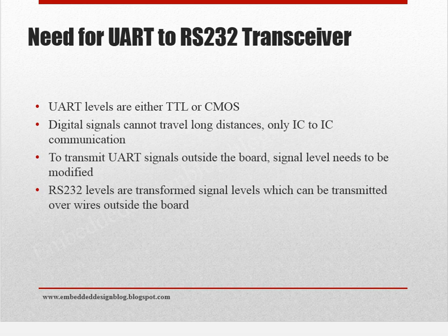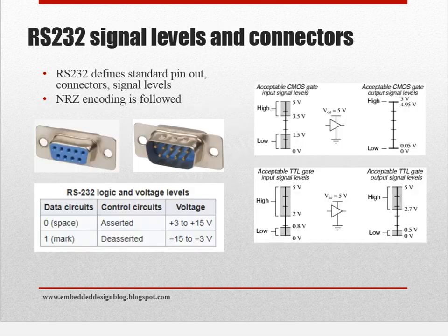We have been talking about TTL, CMOS, and RS232. For CMOS levels, 0 to 1.5 volts is treated as a logic low, and 3.5 to 5 volts is treated as a logic high. These are the logic levels referred to as VIH and VOL. For TTL, 0 to 0.8 volts is treated as a low level and 2 to 5 volts is treated as a high level.